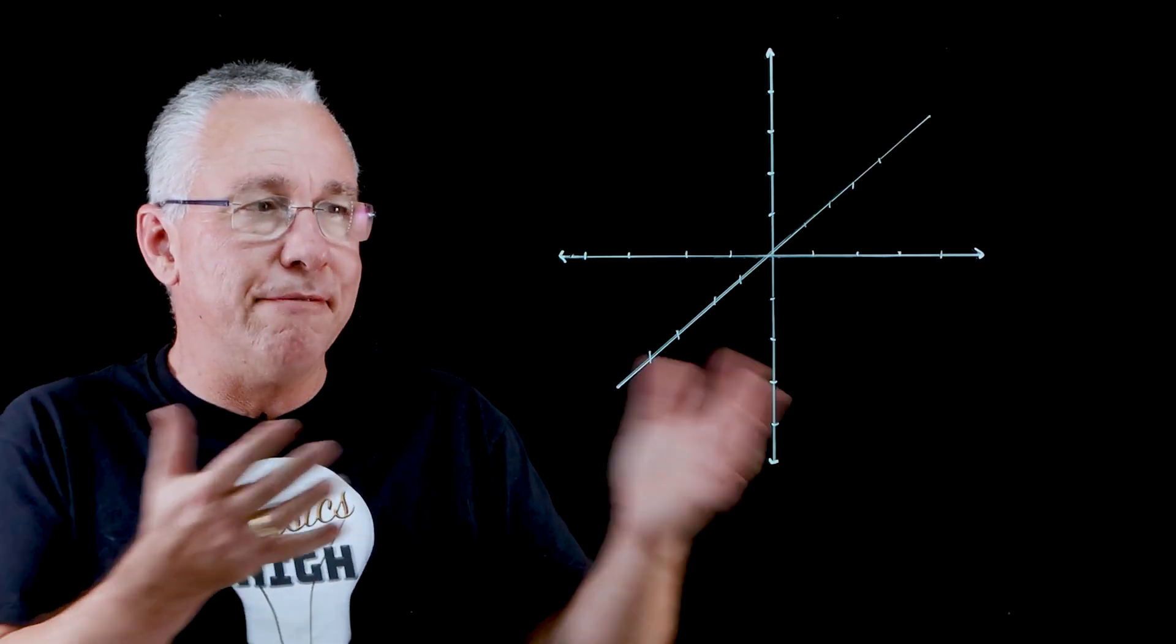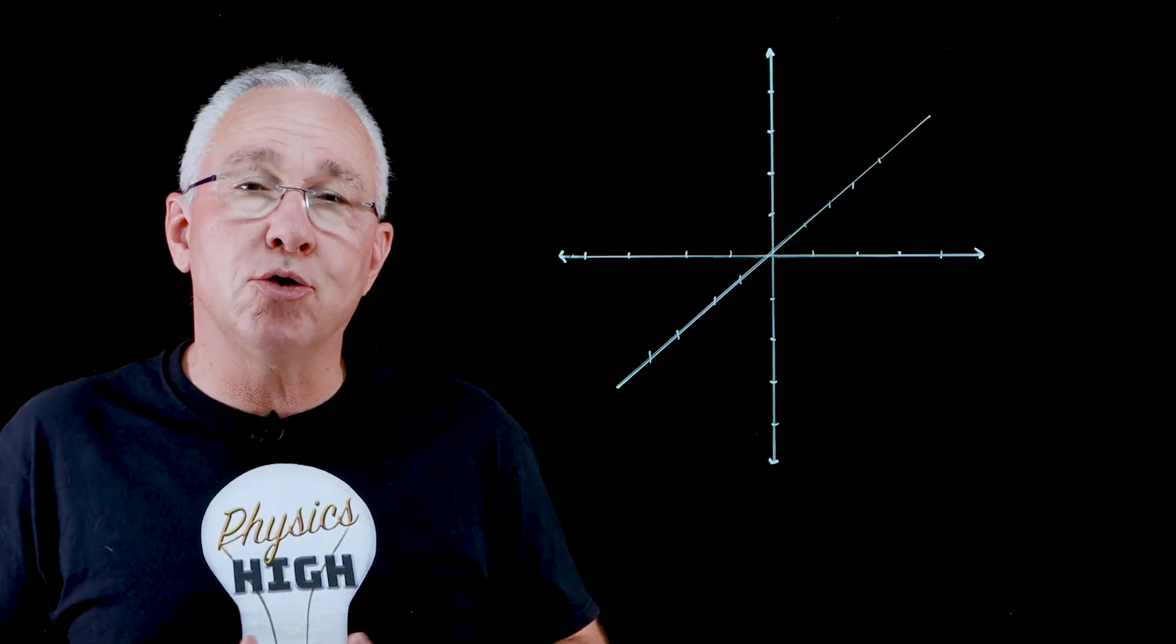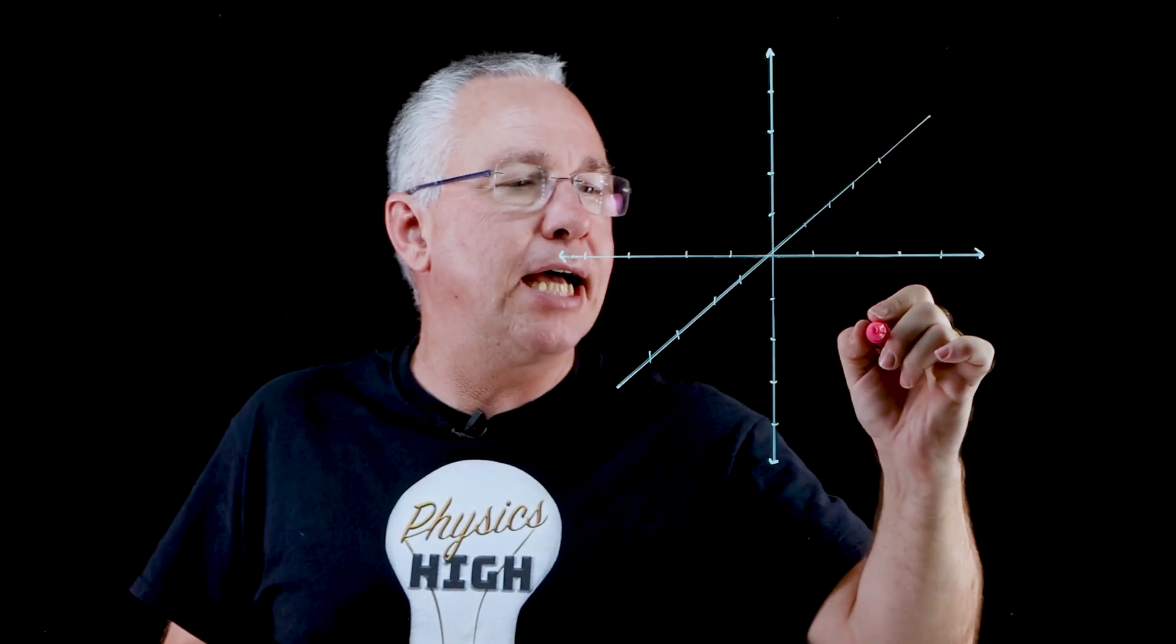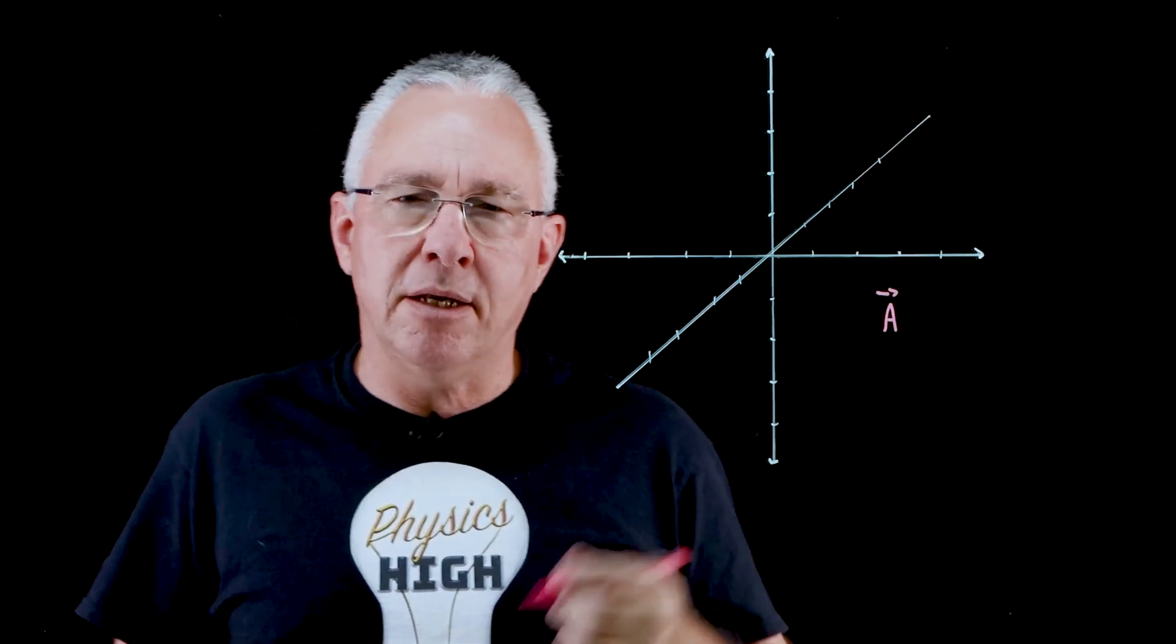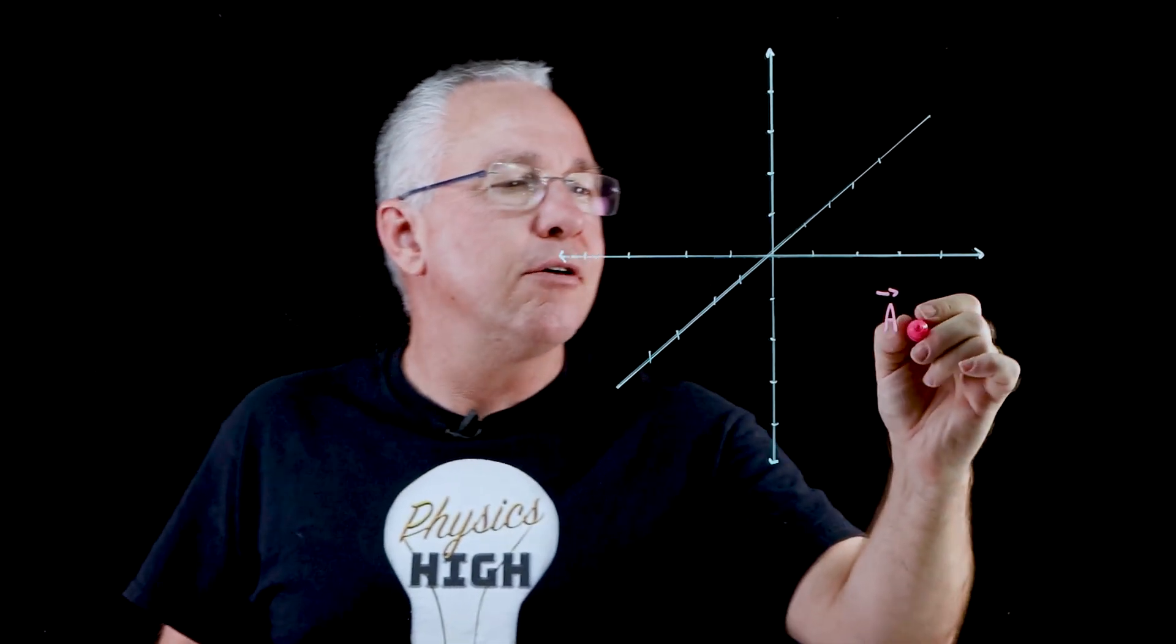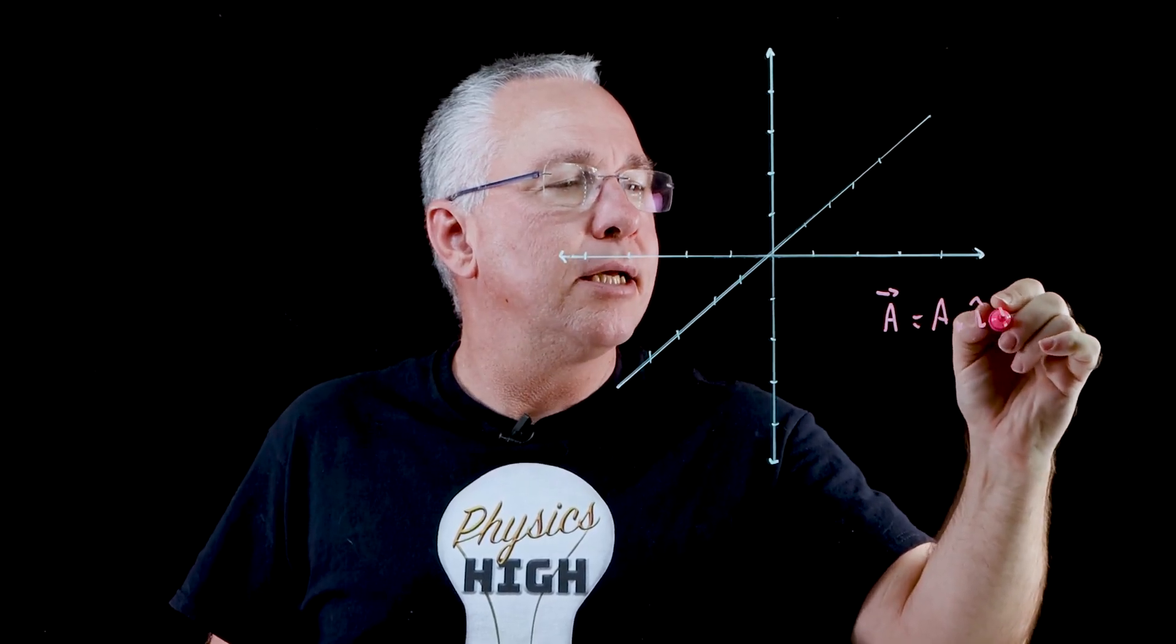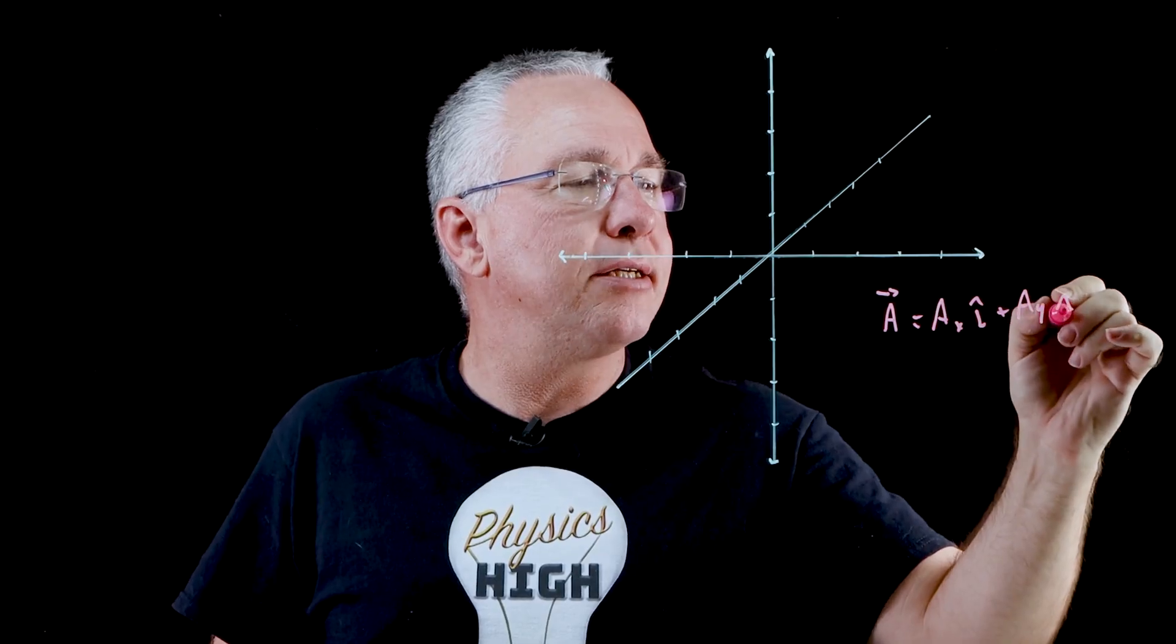So what if I now have three dimensions? How would I draw a vector in three dimensions? Well, let's say my vector a, and we again make sure we got the notations right. Well that of course is the x component with i hat plus the y component j hat.